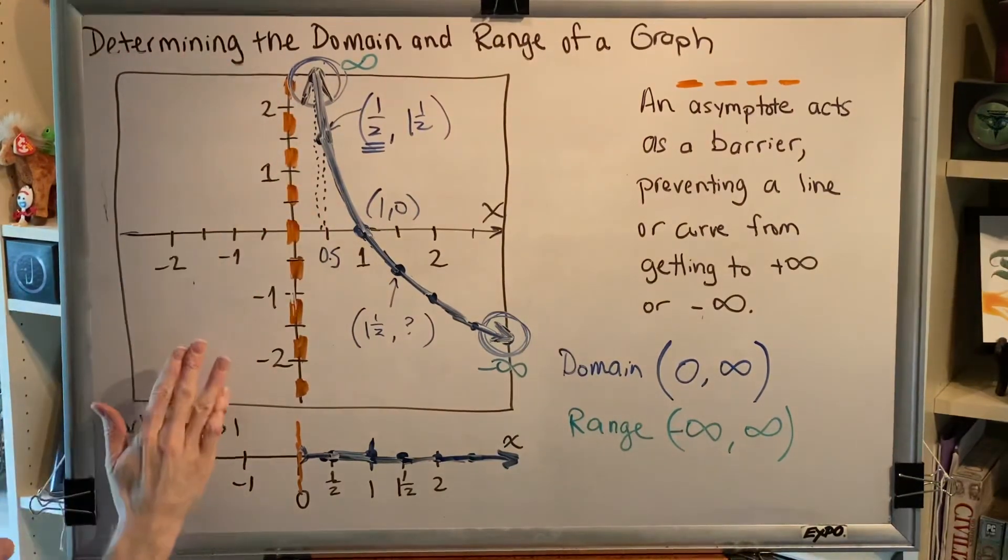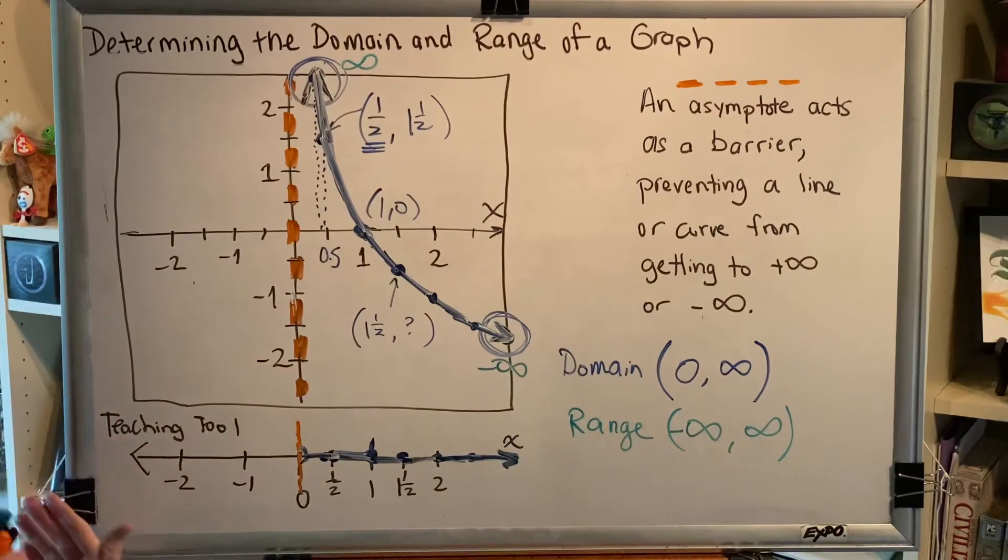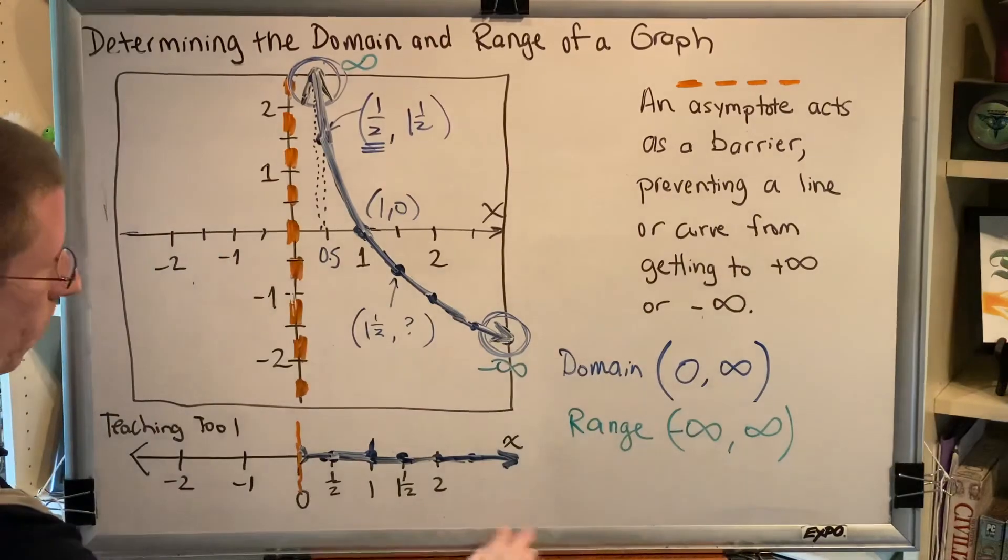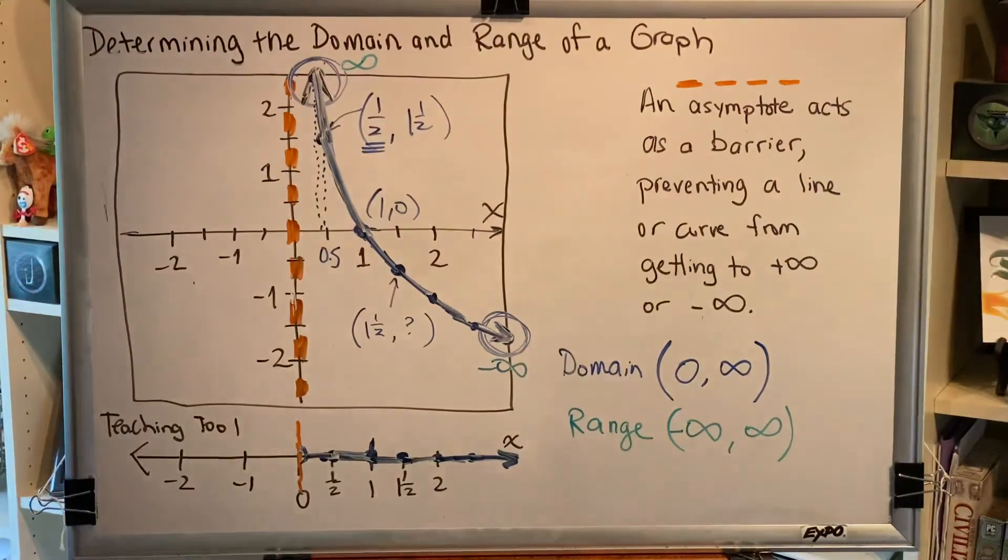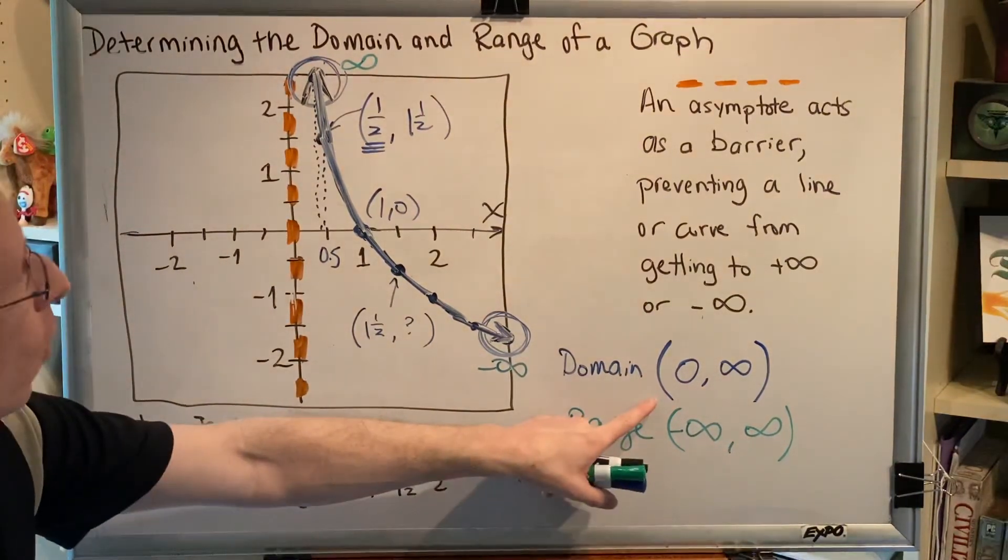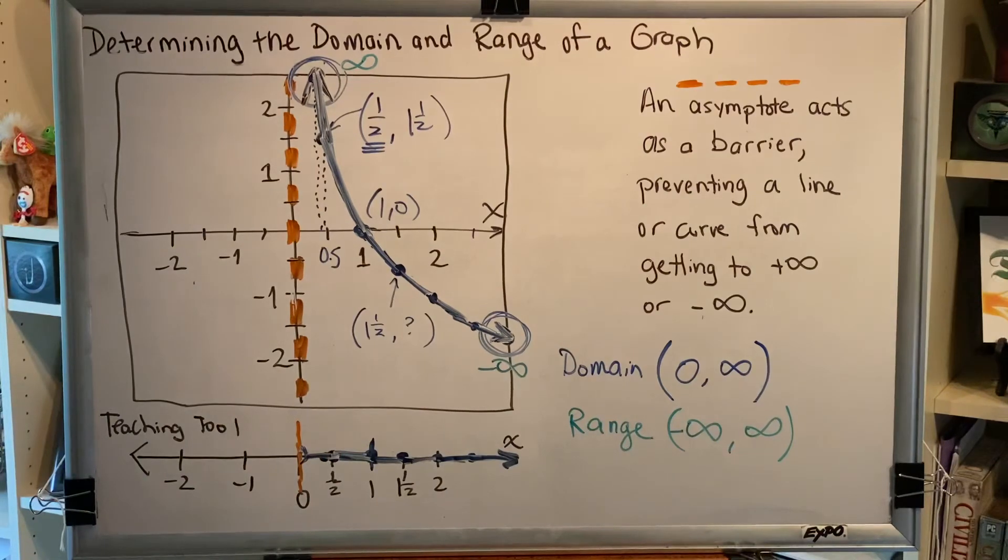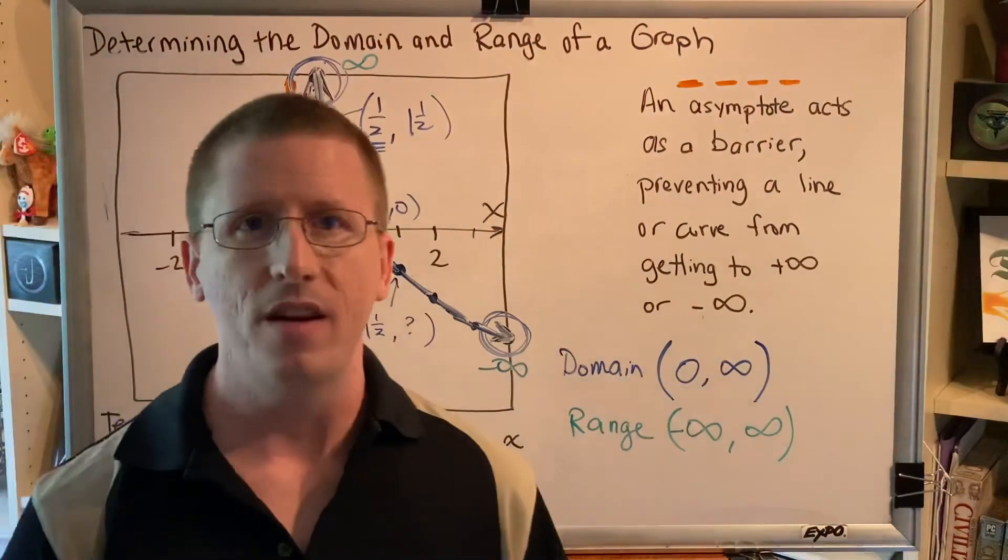There is no part of the graph that is to the left of the y axis. Therefore there are no negative x coordinates. Therefore our domain goes from zero all the way to infinity, and we have to have a parenthesis at zero. Hopefully that explained that idea thoroughly so that everyone has a solid understanding.